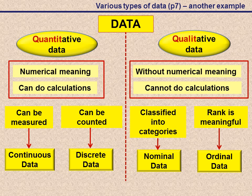For quantitative data, we have two measurement scales, namely discrete or continuous data. For qualitative data, we have nominal or ordinal measurement scales.